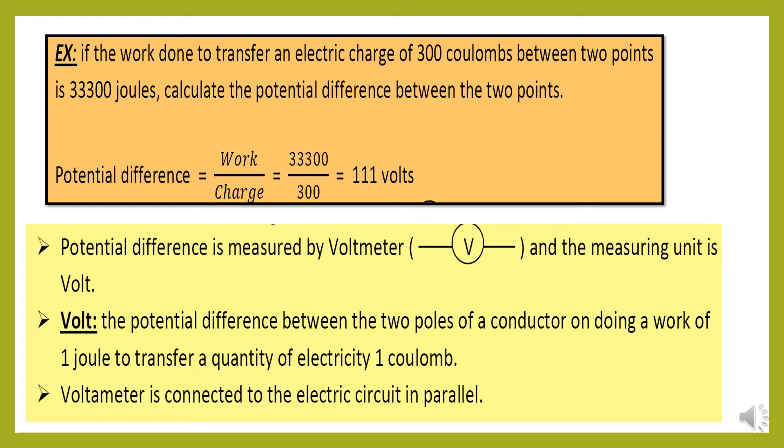Volt, what is meant by volt, the potential difference between the two poles of a conductor on doing a work of one joule to transfer quantity of electricity or quantity of a charge one coulomb. Voltmeter is connected to electric circuits in parallel.